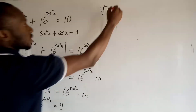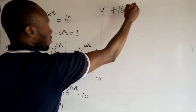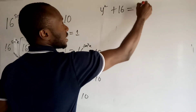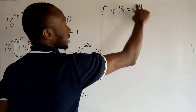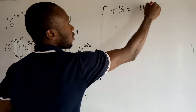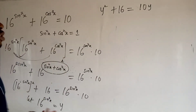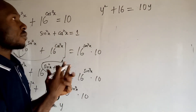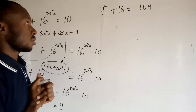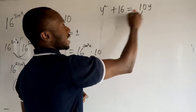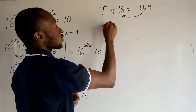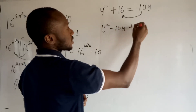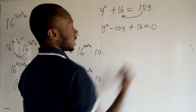This is a quadratic equation, and we are going to solve it by the factorization method. Taking the 10y to the other side, I have y squared minus 10y plus 16 is equal to 0.